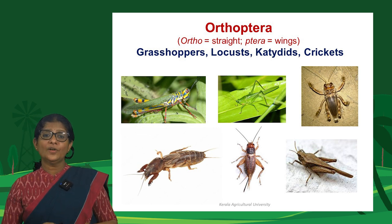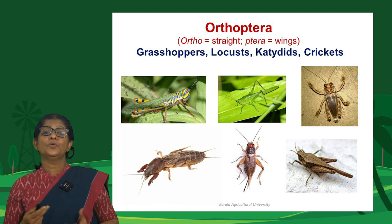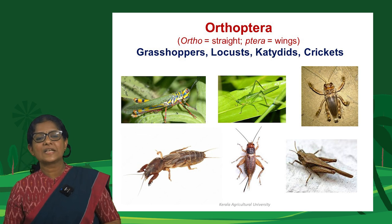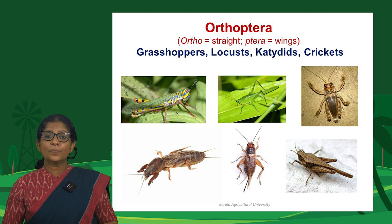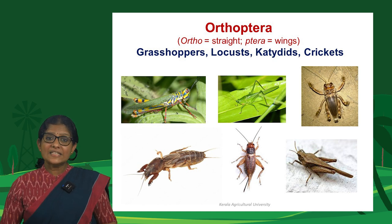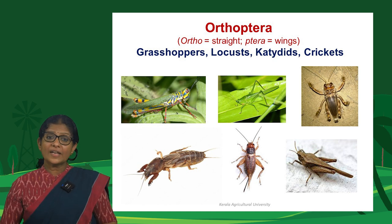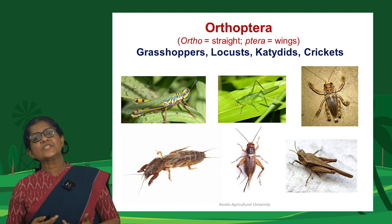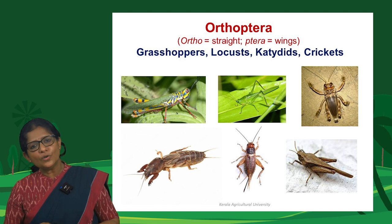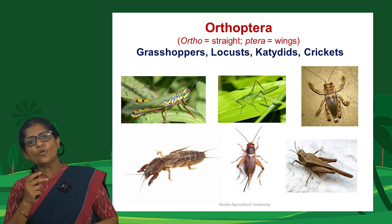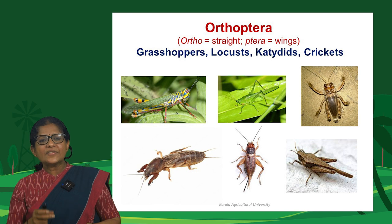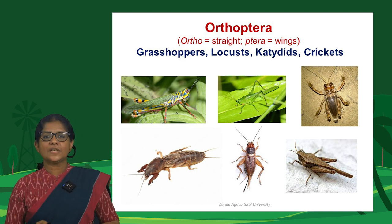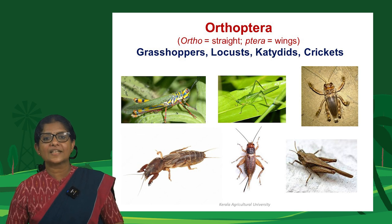Orthoptera is a large order including grasshoppers, locusts, katydids, crickets, mole crickets, and many others — a diverse and agriculturally important group. The name Orthoptera comes from 'ortho' (straight) and 'ptera' (wings), as the forewing of grasshoppers is straight and parallel-sided.